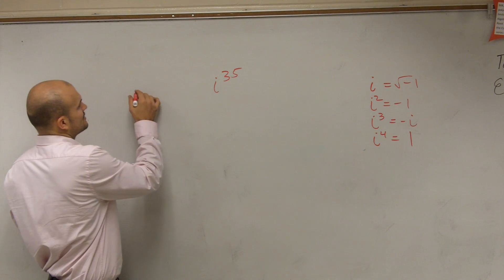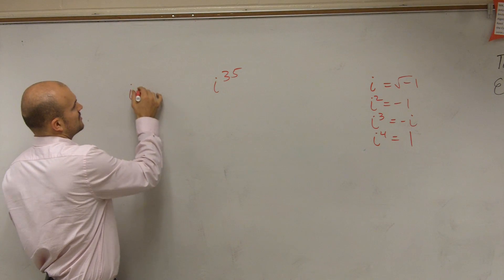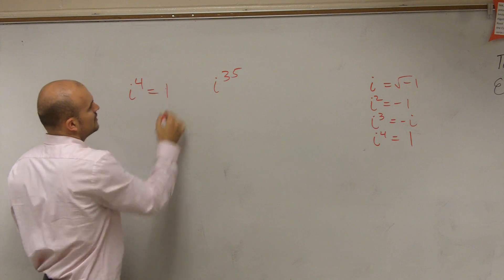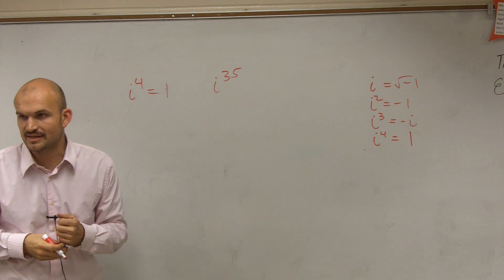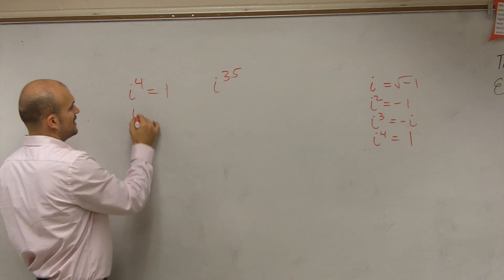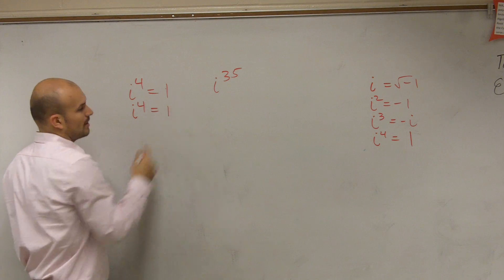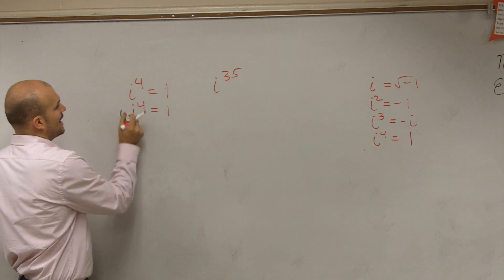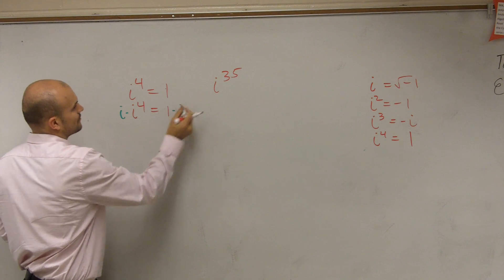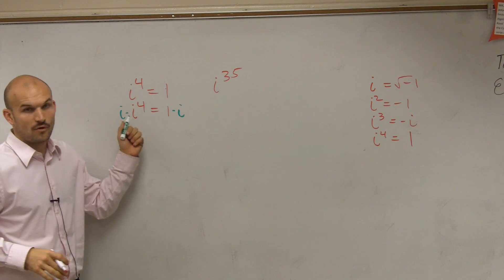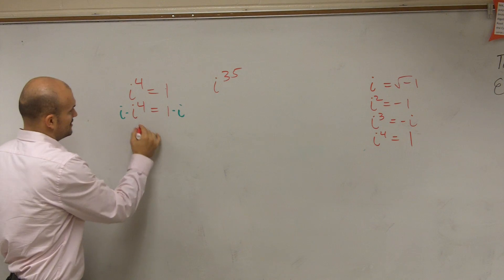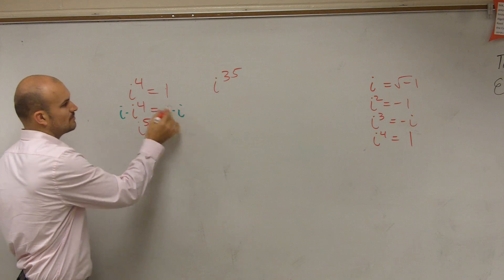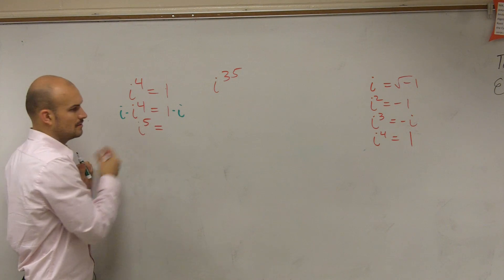So the first thing I look at is I say, all right, if I have i to the fourth equals one, let's figure out what i to the fifth is. So to figure out i to the fifth, what I'm going to do is multiply by i on both sides. So i to the fourth times i is i to the fifth. And what's one times i? i.